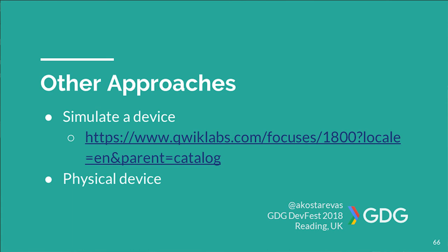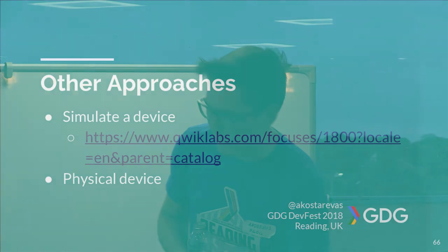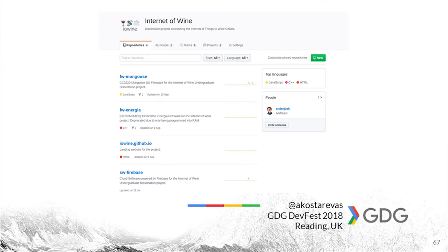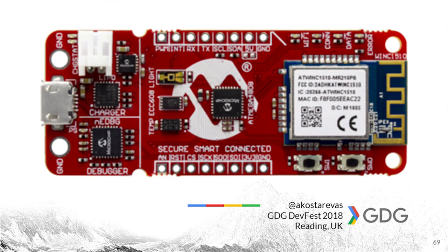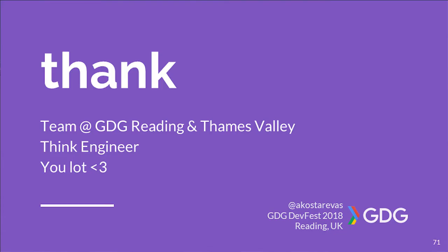So there are other approaches you can take on the hardware side. You can either simulate a device — all of you got Qwiklabs tokens, and there's actually a Qwiklabs that teaches you Google IoT Core in a more stable way, because it runs on your PC and doesn't rely on hardware that can break. Or you can use a physical device. My dissertation is about monitoring wine cellars, so I'm slapping IoT things into a wine cellar — currently just logging humidity and temperature data. There's another board I was going to examine that was recently announced and is a good starter board. Thanks for listening — I'm hoping this helped you understand what the Internet of Things is.